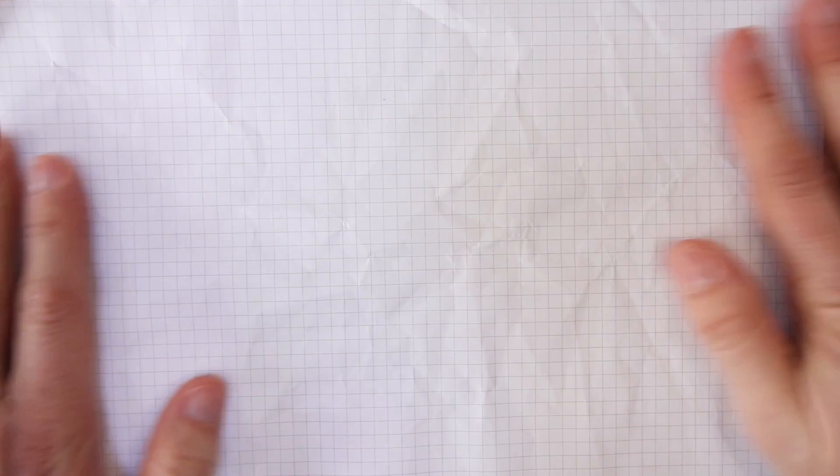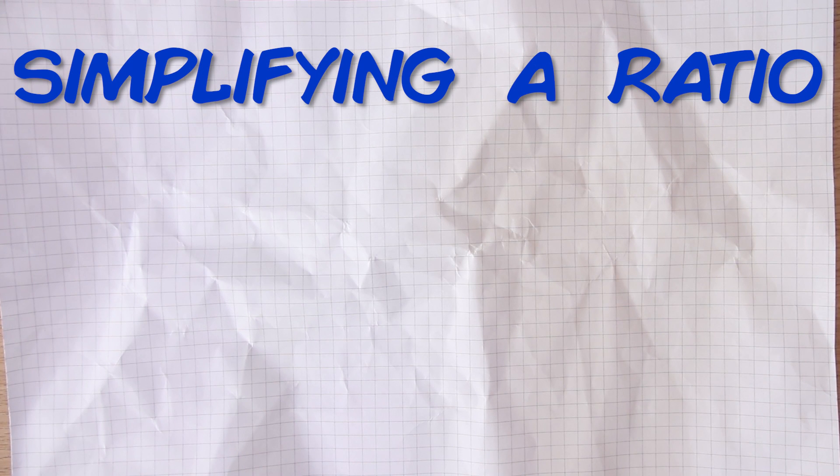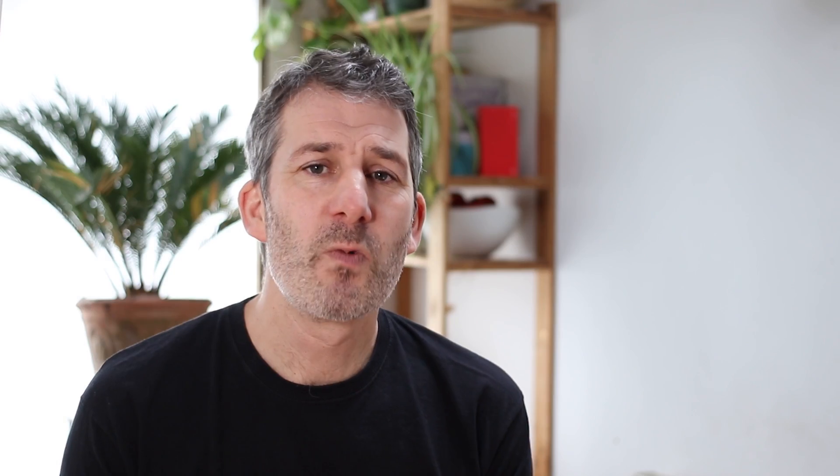The next thing to look at is how to simplify a ratio. Actually before that, why do we simplify a ratio? Well it's just to make the numbers smaller and easier to understand. It's exactly the same technique as when you simplify a fraction. We're trying to make the numbers as small as possible and we do that by finding the highest common factor of both numbers. What's the largest number that goes into both of them or what's the largest number they can both be divided by.